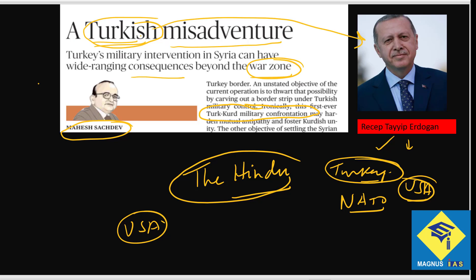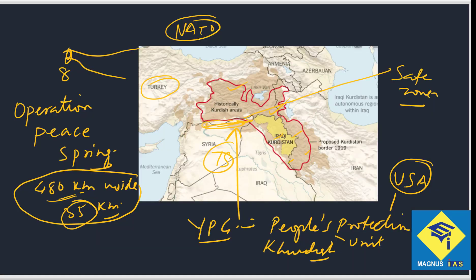The Kurds are poor people with no one supporting them. The USA is moving out, no country wants to give them land, and the Kurds who helped the USA in the Syria crisis are being left alone.